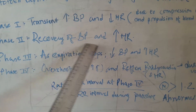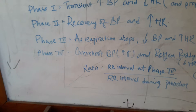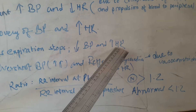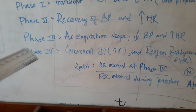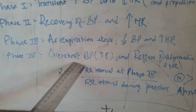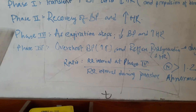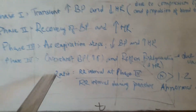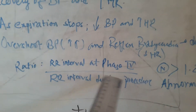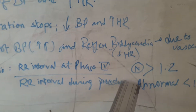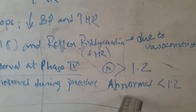In phase 3, as expiration is stopped, there is a decrease in blood pressure and increase in heart rate. In phase 4, due to vasoconstriction, there is an overshoot of blood pressure and reflex bradycardia. The ratio is calculated similarly to the standing test: the R-R interval at phase 4, where there is reflex bradycardia, is compared to the R-R interval during the procedure. Normal is more than 1.2 and abnormal is less than 1.2.